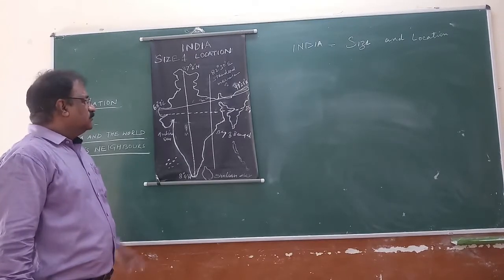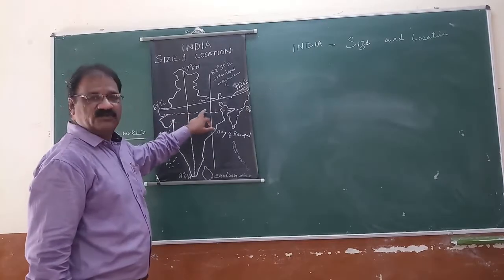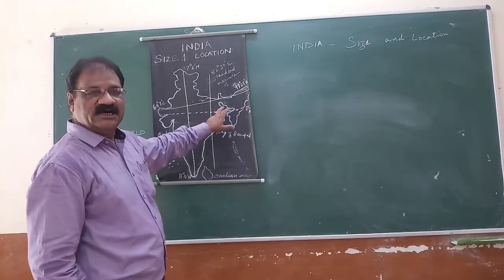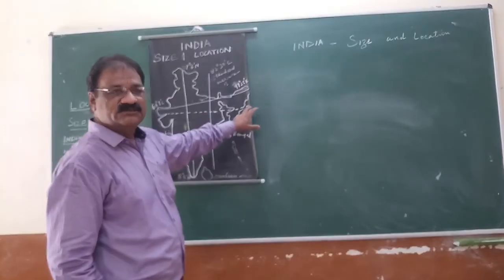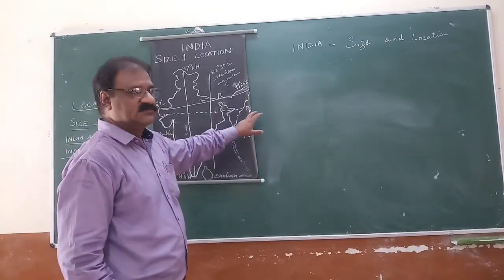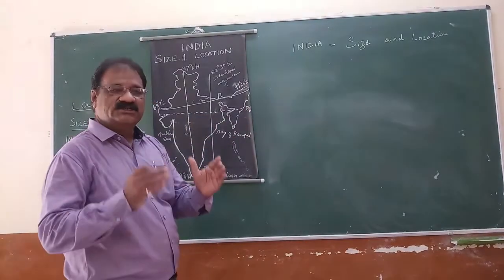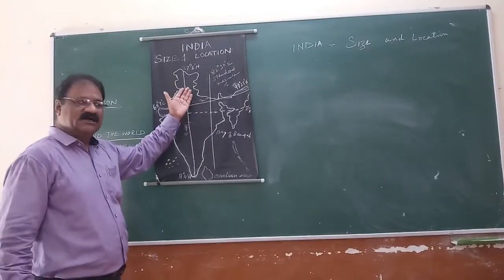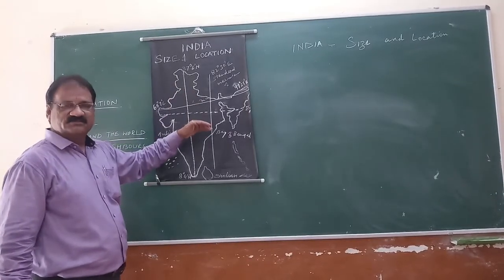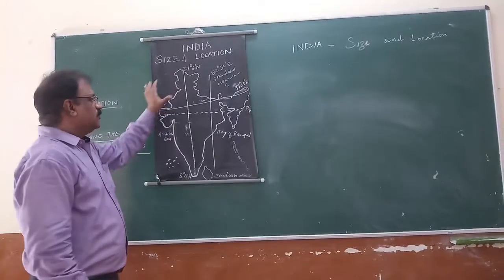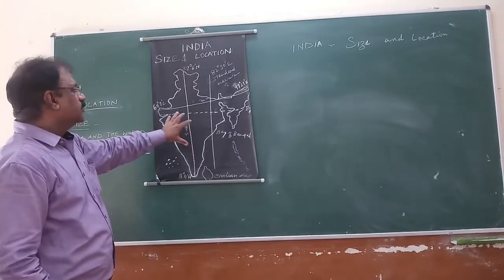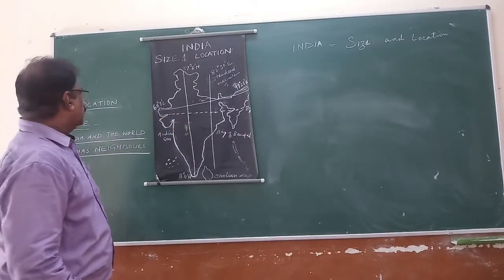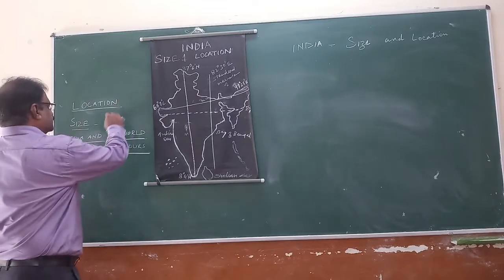The Tropic of Cancer at 23 and a half degree north divides the country into two equal halves — the northern part and the southern part. This is all about the location of India. Now let's come to the size.